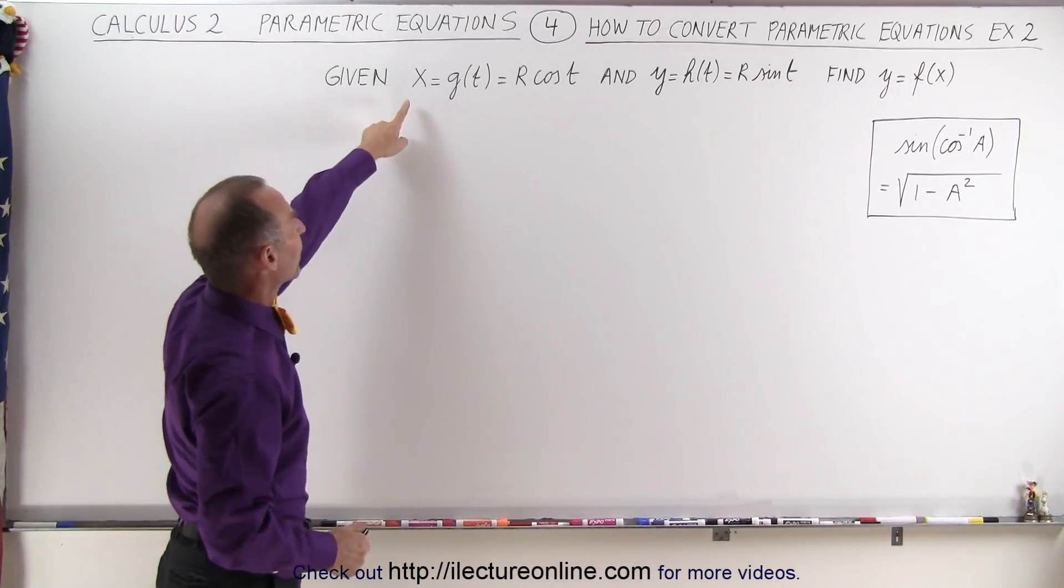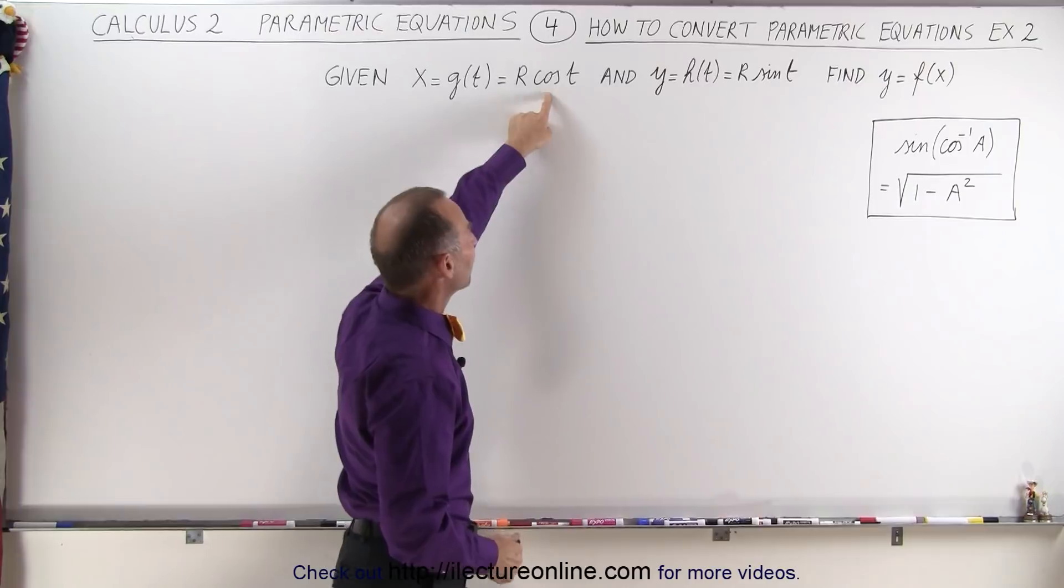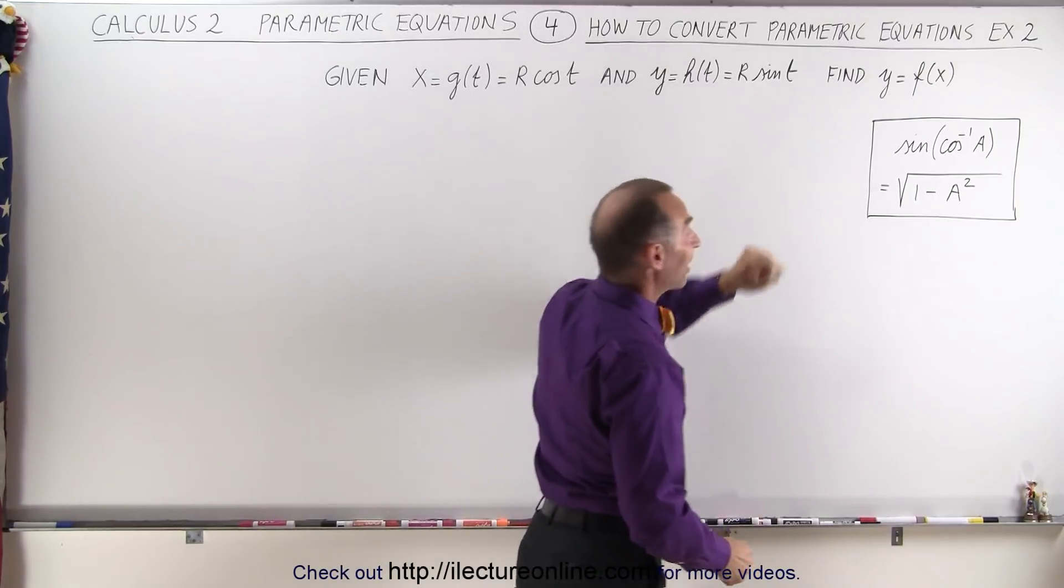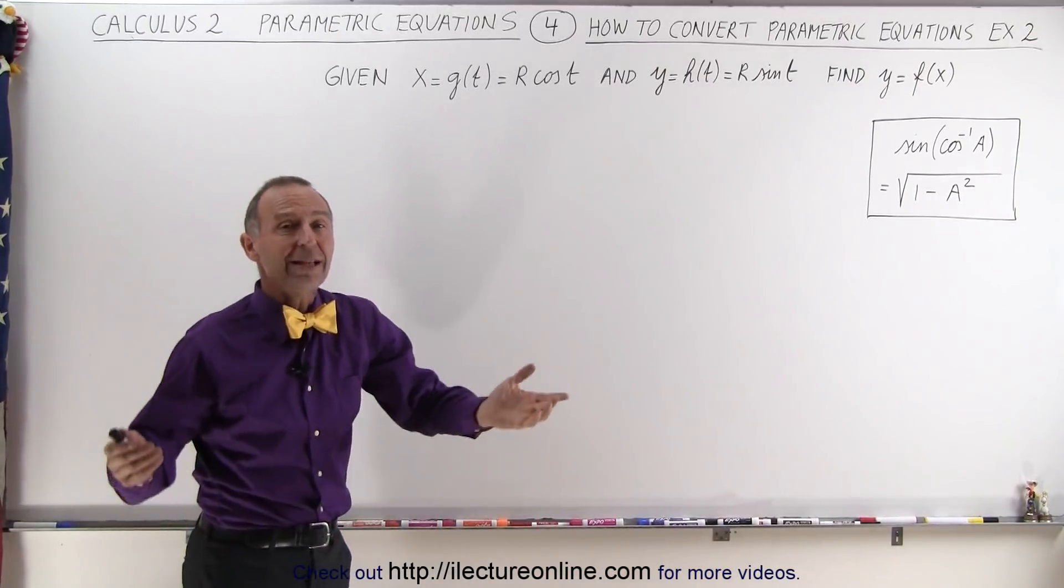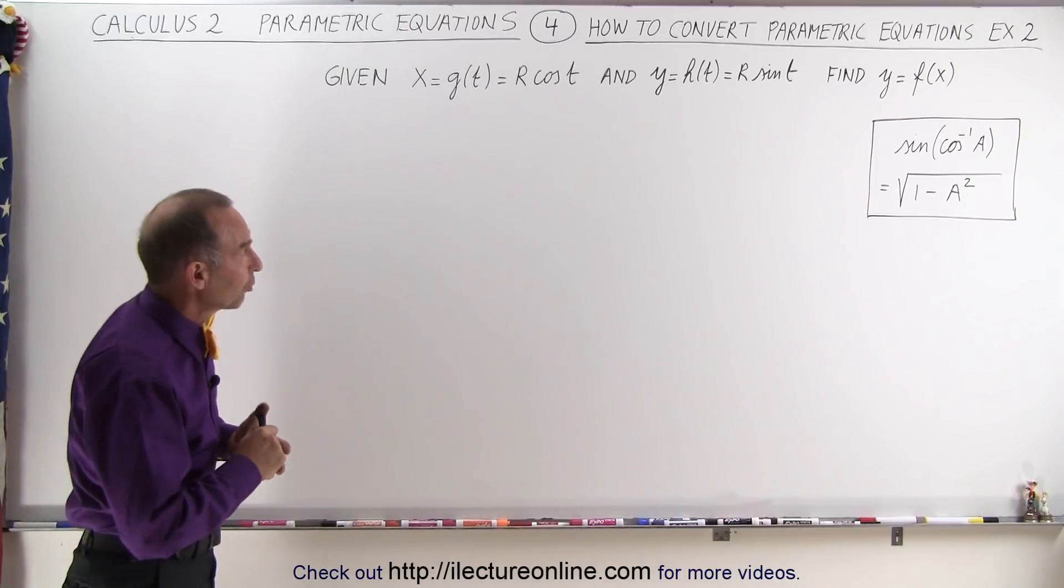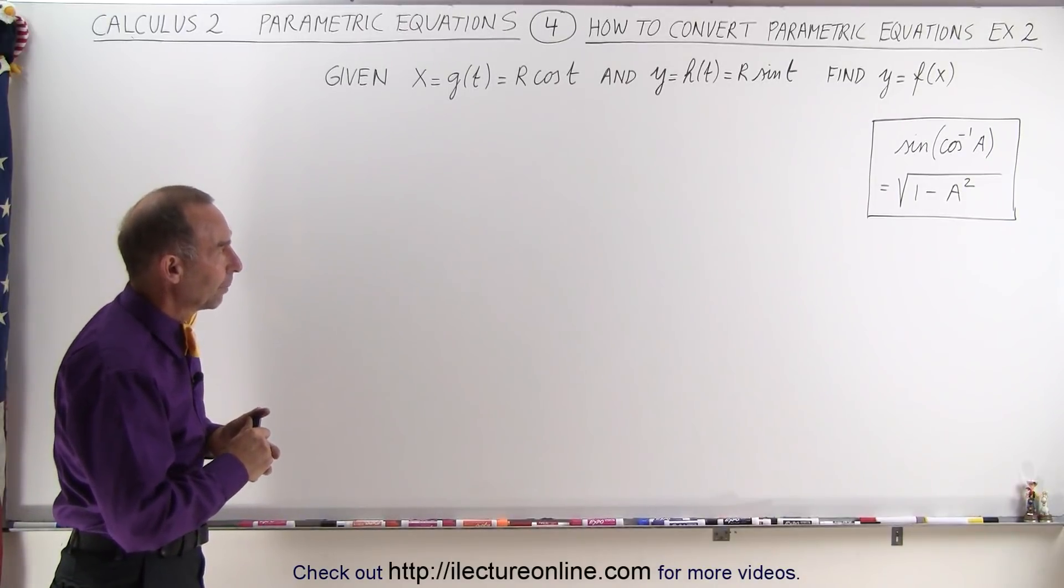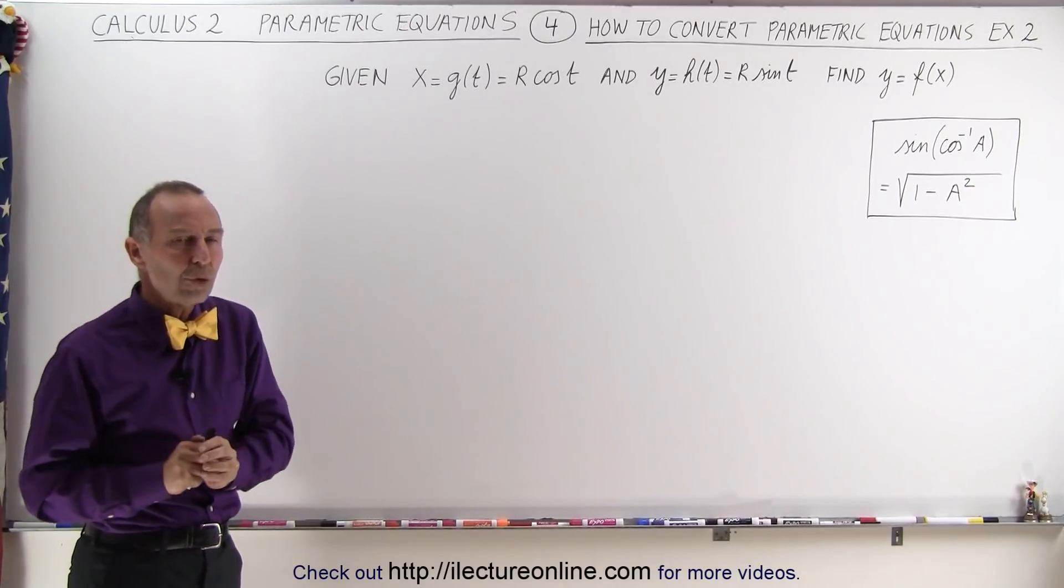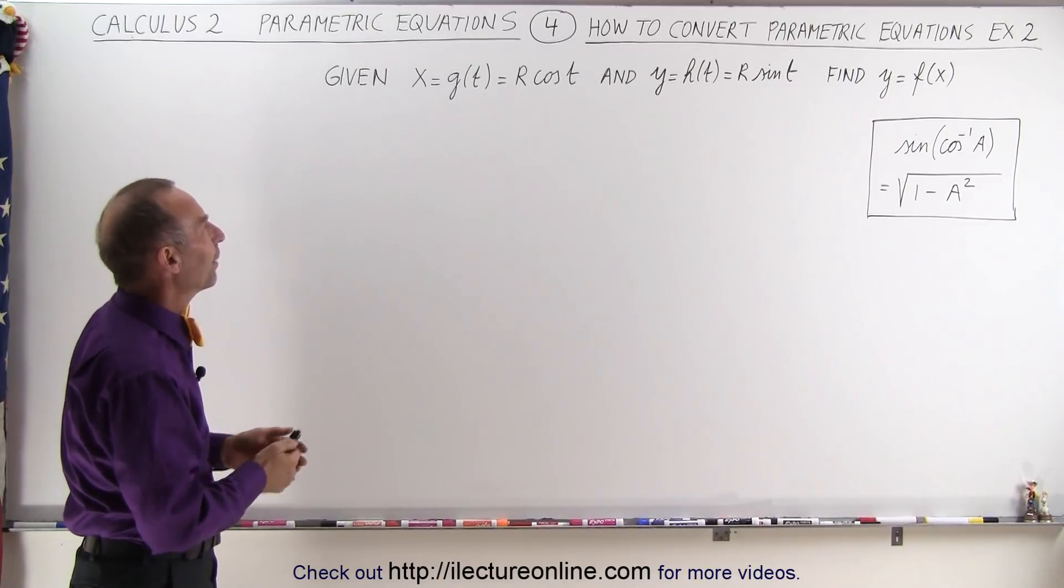Now if we're given the equation where x equals r times cosine of t and y equals r times sine of t, by now you probably realize that's the equation of a circle: x squared plus y squared equals r squared. But let's say you did not know that and you have to figure it out. How would you do that?